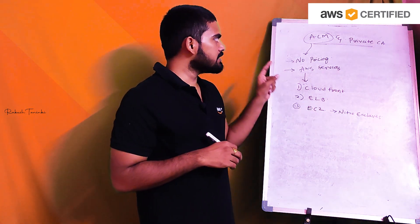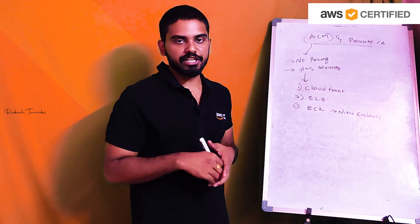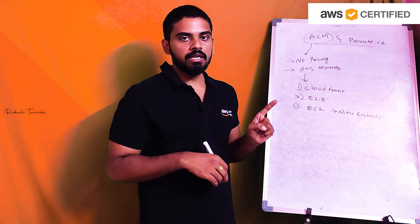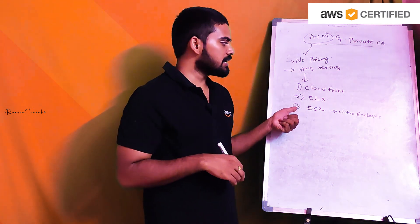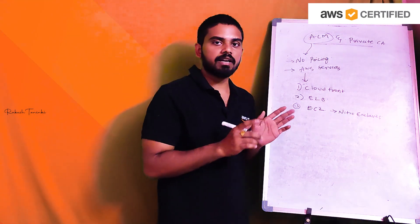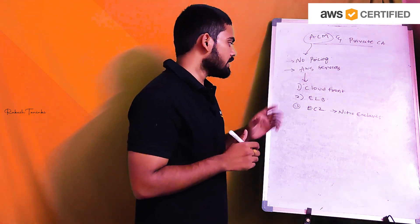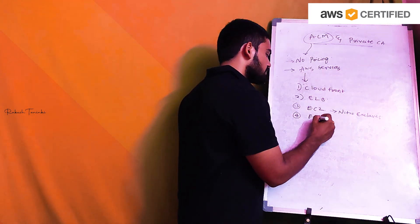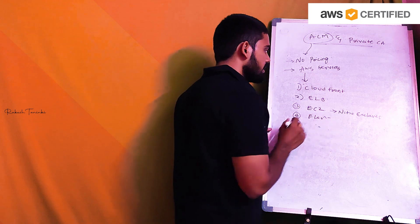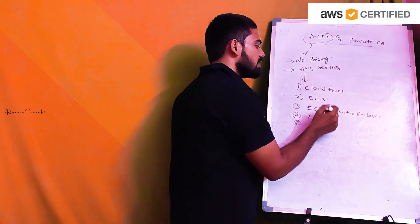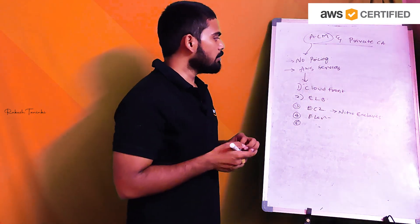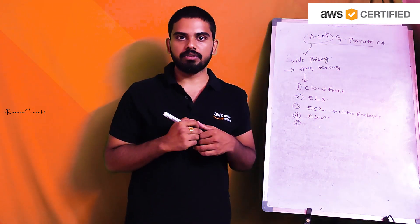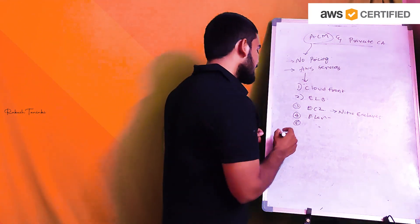In Nitro Enclaves, we will use the ACM certificate directly. If we don't, we create a certificate and add access to the ACM certificate. We can use different services such as EC2, Elastic Beanstalk, CloudFront, and ELB.